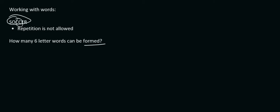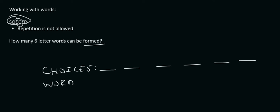So they say how many six letter words can be formed? That would be, you'd open up six places and that would be choices. And then if you wanted to, you could write down a word. So for the first one, we have six letters available. So for the first, we have six choices for the first one.